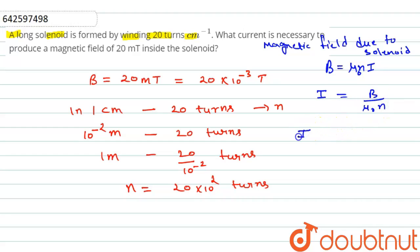Now putting the values here, we have B is equal to 20 into 10 to the power minus 3 divided by mu naught is 4 pi into 10 to the power minus 7 into n is 20 into 10 to the power 2.